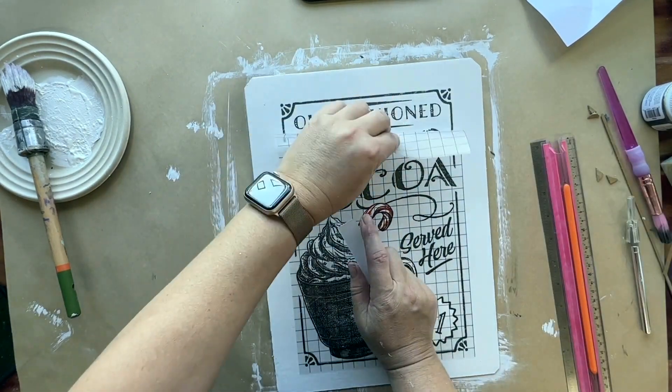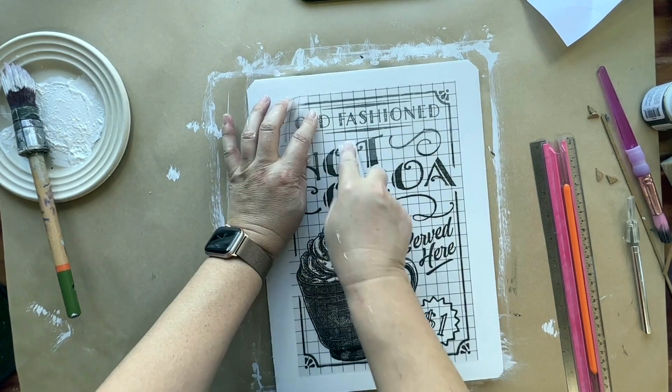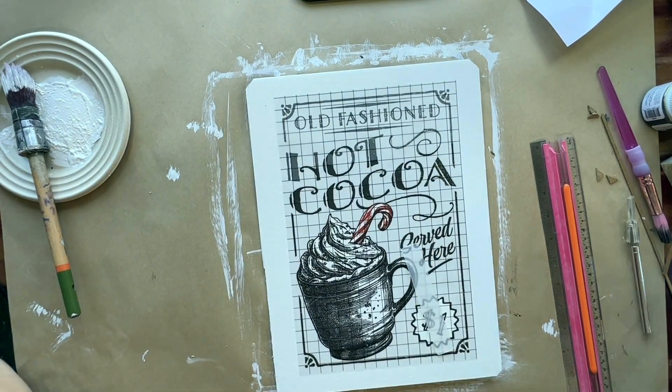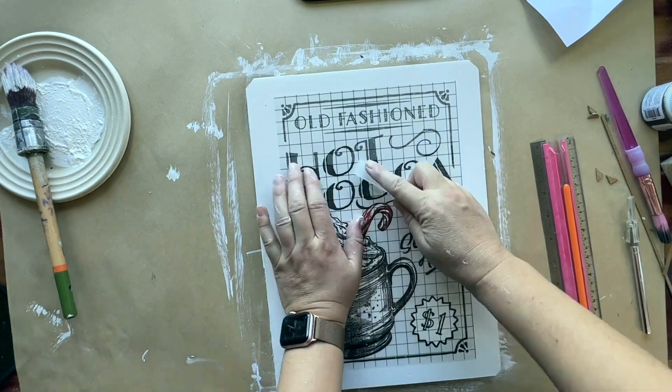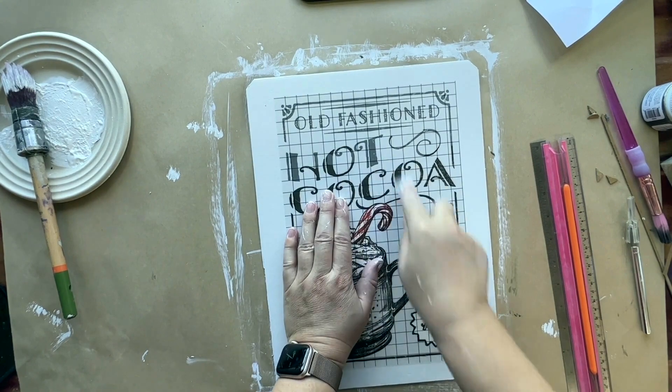I'm just using the tool provided in the transfer pack to rub the transfer onto the backing board. I'm just starting at one corner, working my way down and making sure the design has transferred properly.